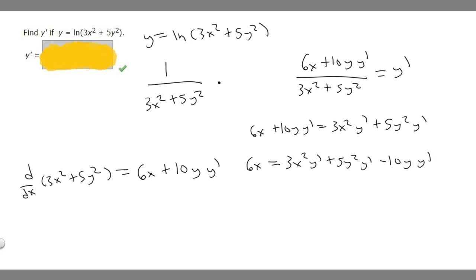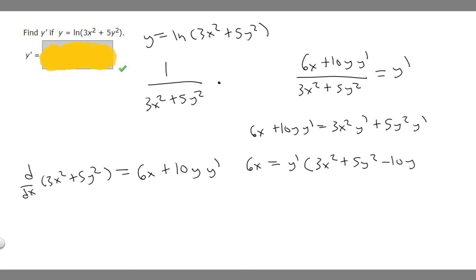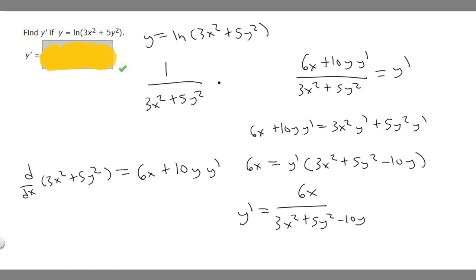Since all the remaining terms have a y prime, we can factor it out. So we have y prime times the quantity 3x squared plus 5y squared minus 10y. Now, solving for y prime, we divide both sides by that expression. So y prime equals 6x over 3x squared plus 5y squared minus 10y. And this is the answer to the problem.